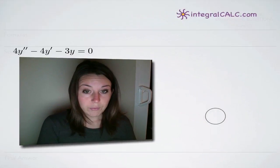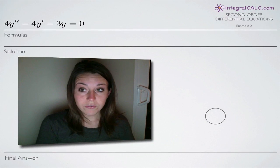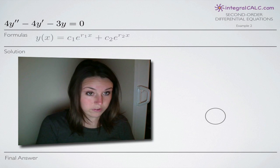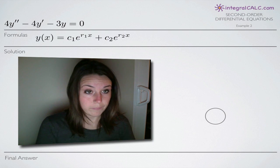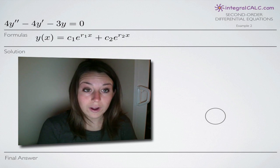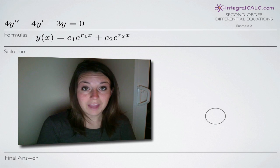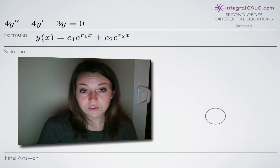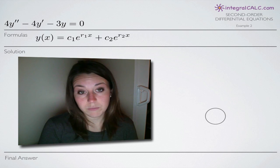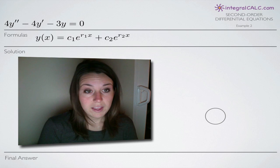With second order differential equations problems, we always use the formula y of x equals c sub 1 times e to the r sub 1 times x, plus c sub 2 times e to the r sub 2 times x.